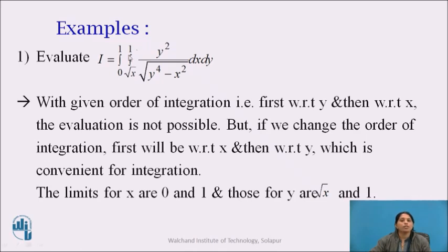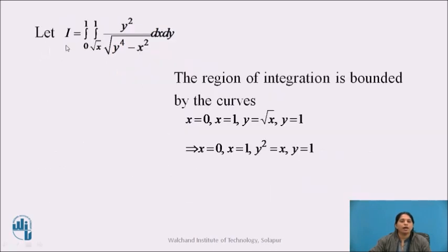But if we change the order of integration — that is, first with respect to x and then with respect to y — the integration will be convenient. So we will change the order of integration. In the given example, the limits of x are 0 to 1 and the limits of y are root x to 1. Let us assign the given integral as I, that is integration from 0 to 1, integration from root x to 1, y² upon under root of (y⁴ minus x²), dx dy.